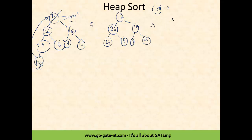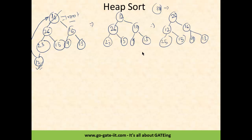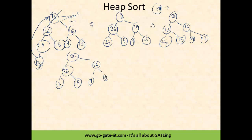Now with 12 at the root, we run step 3 — adjustment of CBT following the heap tree property. We reconstruct: 26 comes up, 12 moves down, then 16, 25, 15, 9, and 13. You can notice 25 is at the wrong position, so we adjust again: 26, 25, 12, 15, then 16, 9, and 13 — following the max heap property. Now the last leaf node 13 will replace 26. So 26 is deleted from the root and pushed into the sorted array.